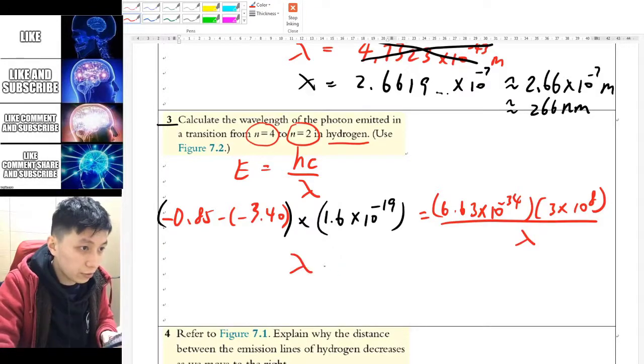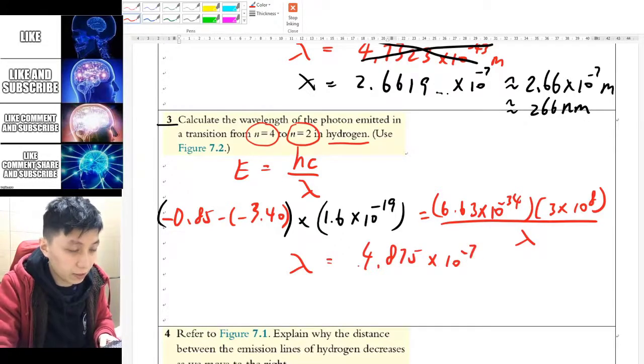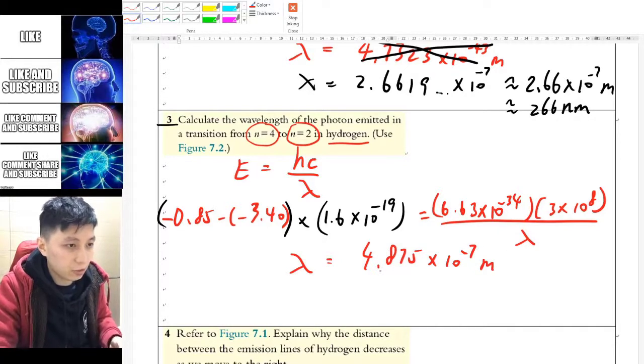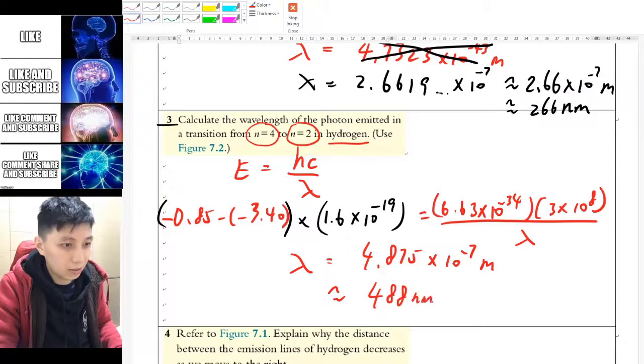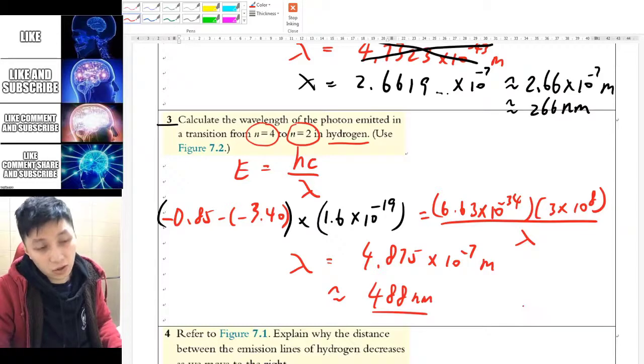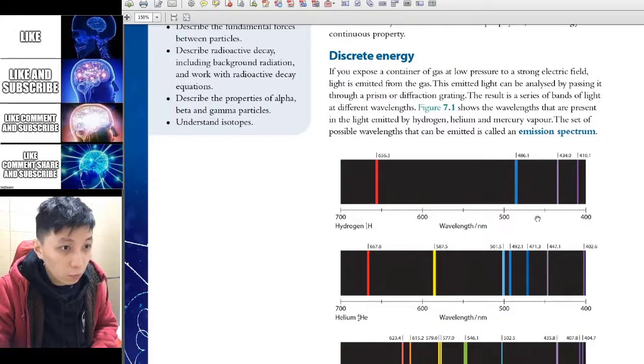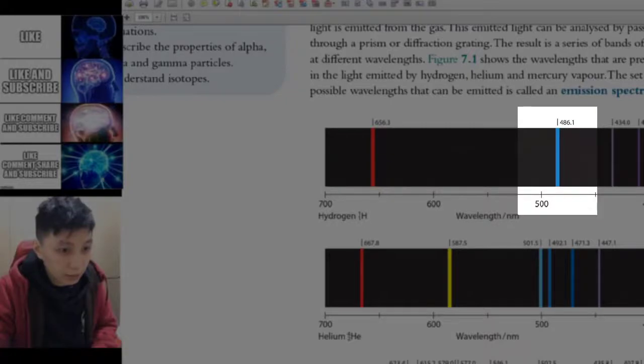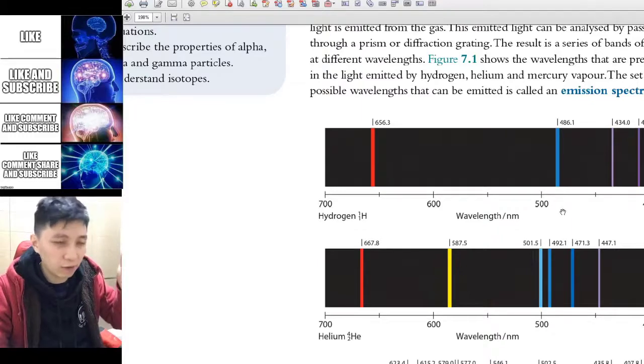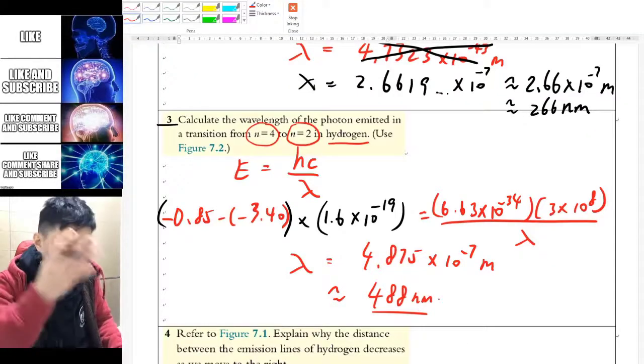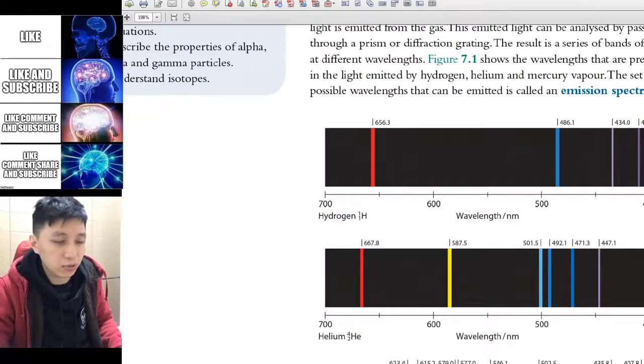So eventually you should get lambda to be 4.875 times 10 to the power of negative 7. Yeah, that's pretty much it. So you can rewrite it as, if you like to, 488 nanometer. And again, let's check if it is on the emission spectrum. It should be. So for hydrogen, we have got 486. The one that we got is 4, yeah, I think it's very close enough. Probably some sort of rounding issue. And that's why that will produce a difference between our answer and the one on the textbook diagram. But yeah, it is pretty close enough.